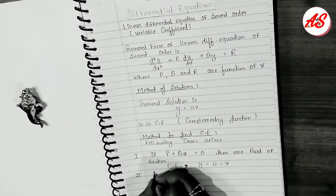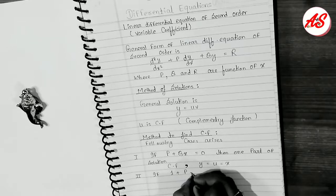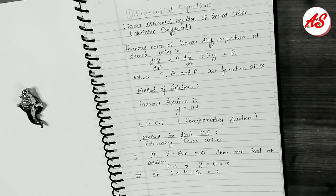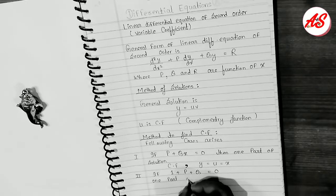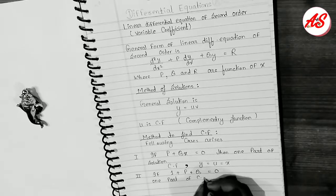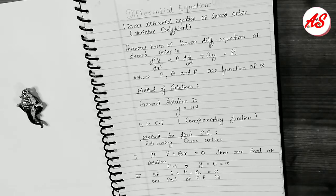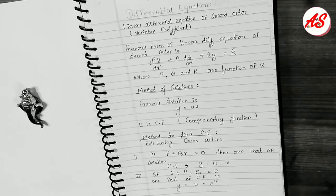The second method: if 1 + P + Q = 0, then one part of the CF is y = u = e^x. The third method: if 1 − P + Q = 0,